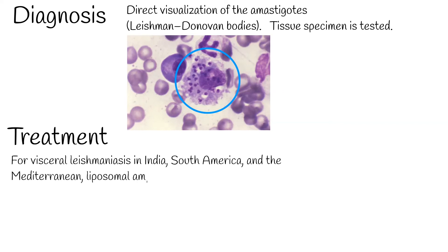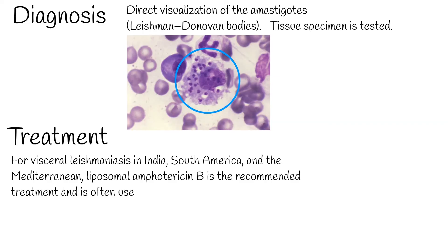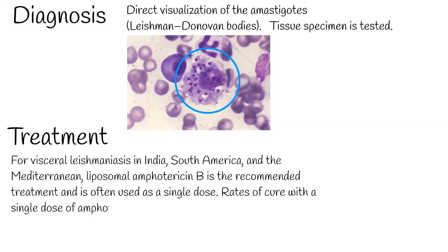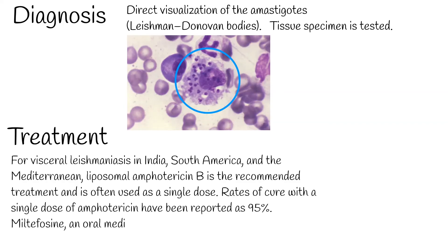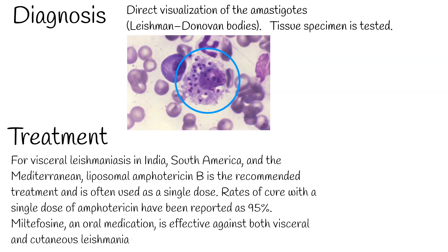Treatment: For visceral leishmaniasis in India, South America, and the Mediterranean, liposomal amphotericin B is the recommended treatment and is often used as a single dose. Cure rates with a single dose of amphotericin have been reported at 95%. Miltefosine, an oral medication, is effective against both visceral and cutaneous leishmaniasis. Side effects are generally mild, though it can cause birth defects if taken within three months of getting pregnant.